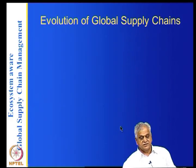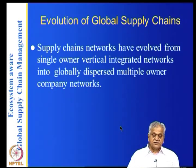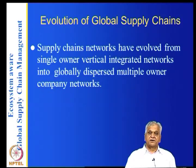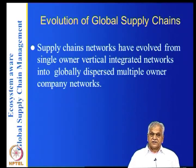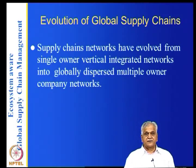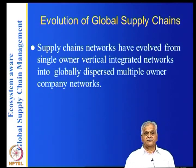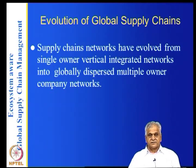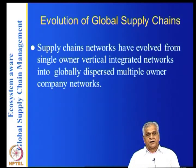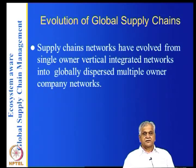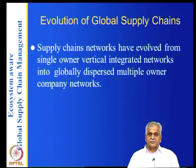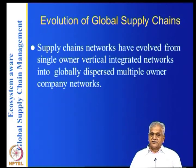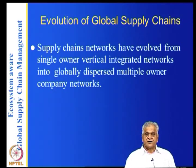The first lecture covers motivation - how global supply chain networks have evolved from single-owner vertically integrated networks into globally dispersed multiple-owner company networks. This is a big difference. Companies like Henry Ford, General Motors, Chrysler, IBM, and Intel were all vertically integrated - they could be global but there was only one owner.